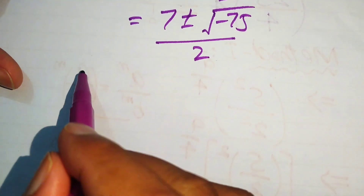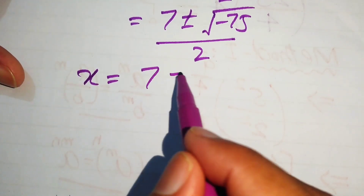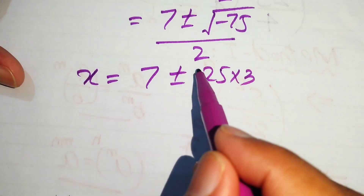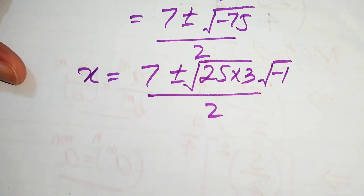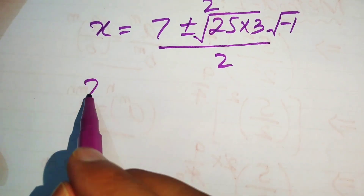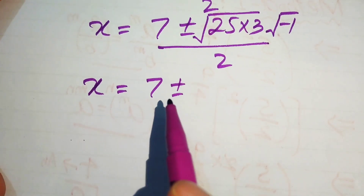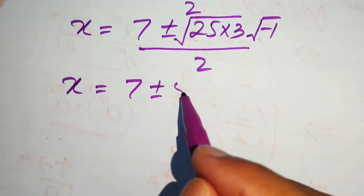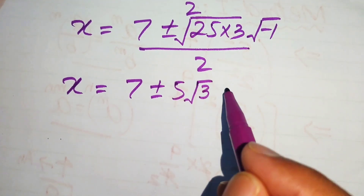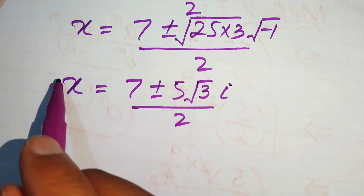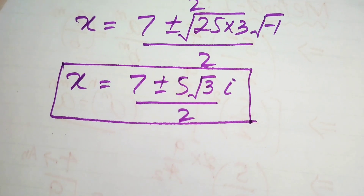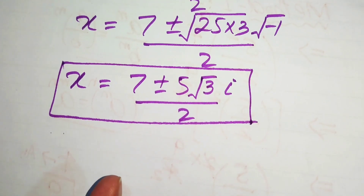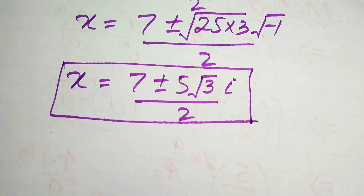Rewriting the square root of minus 75 as 5i√3, the two complex roots from Case 2 are x equals (7 plus or minus 5i√3) divided by 2. These are all the roots of the given equation. The final answers are x equals 6, x equals minus 4, x equals (minus 3 plus or minus 5i√3)/2, and x equals (7 plus or minus 5i√3)/2. Thank you for watching — please subscribe for more videos.